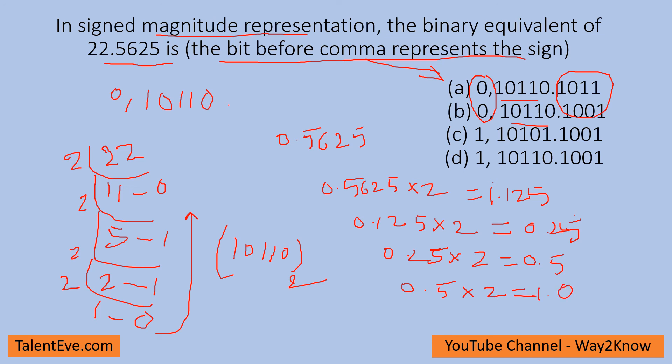0.25 times 2 gives 0.5, and then 0.5 times 2 gives 1.0. There is no decimal number after this. If you represent this number, it becomes 1001. So the total digit will be 10110.1001. That means b is the answer.